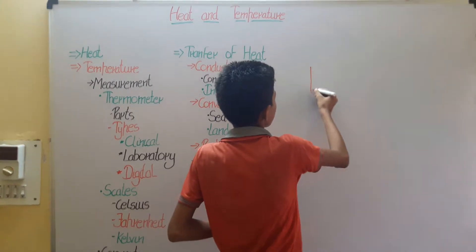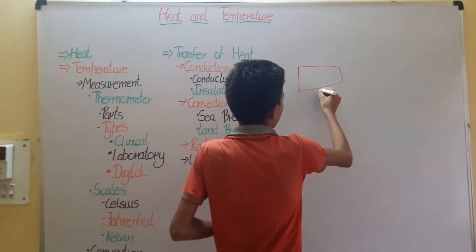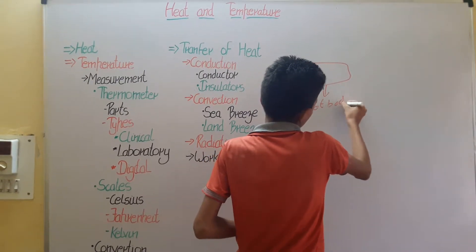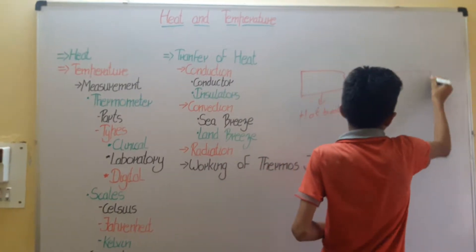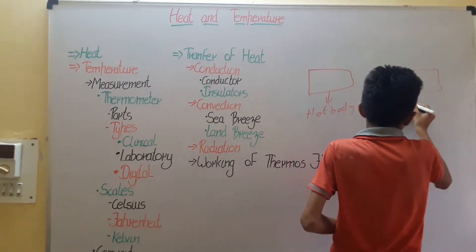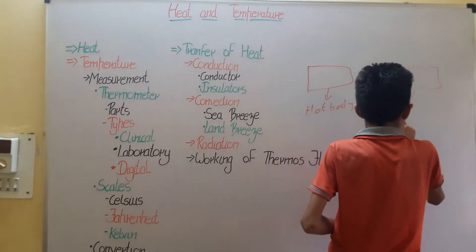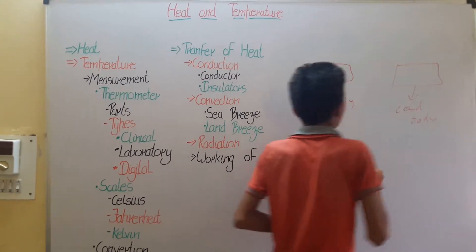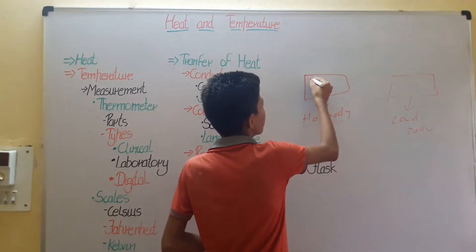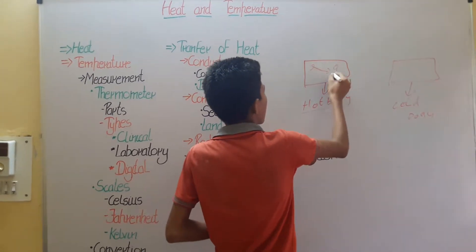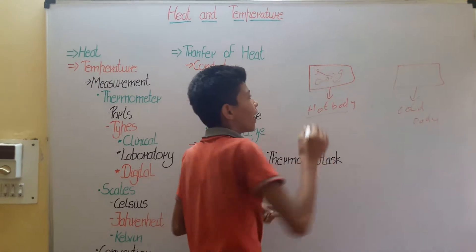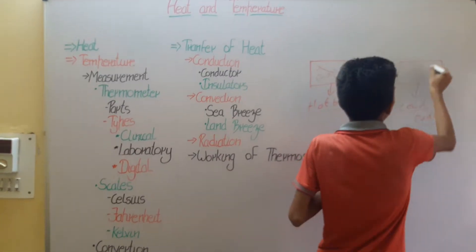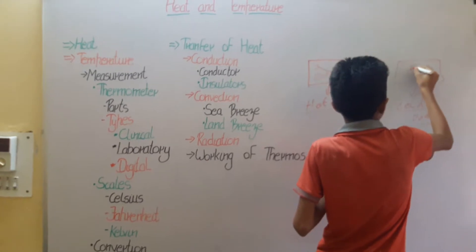Take this hot body and this cold body. The molecules of the hot body would move very fast compared to the cold body. In the cold body, they move very slowly.